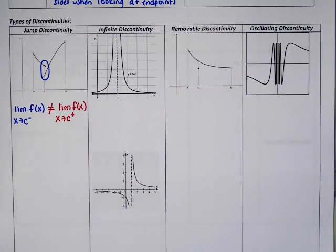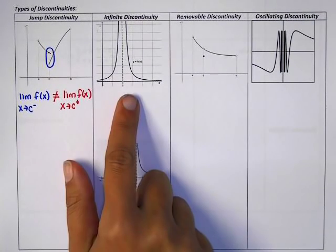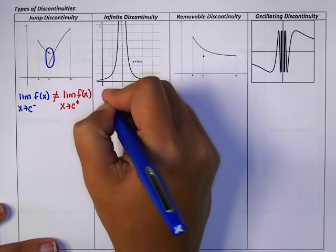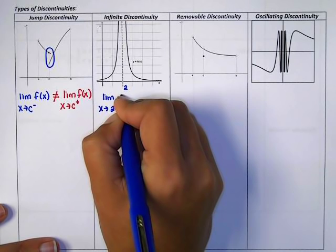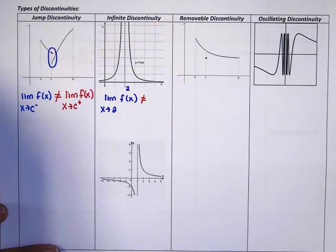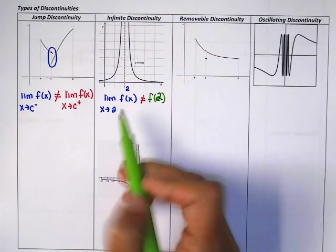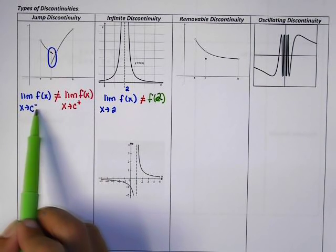For an infinite discontinuity there are two situations. The graph can go the same direction near the asymptote — like a volcano — or go opposite directions like 1 over X, which I sometimes call the kung fu function. If it's like a volcano, we can use a two-sided limit because the two sides match. So the limit as X approaches 2, for example, equals infinity.